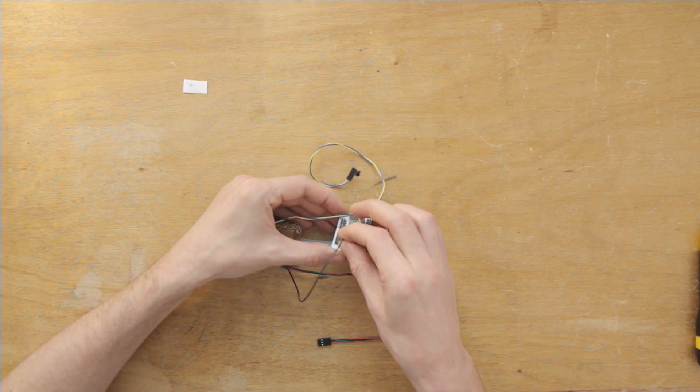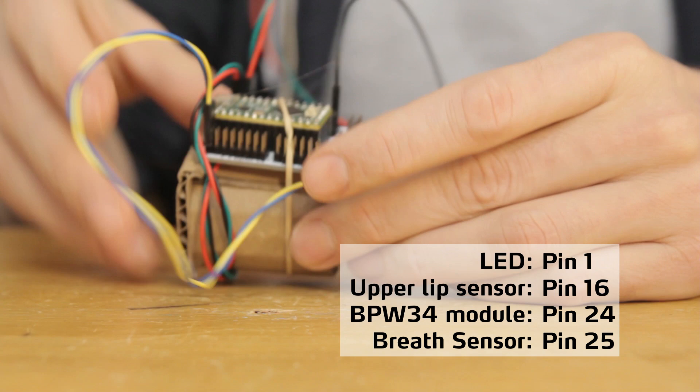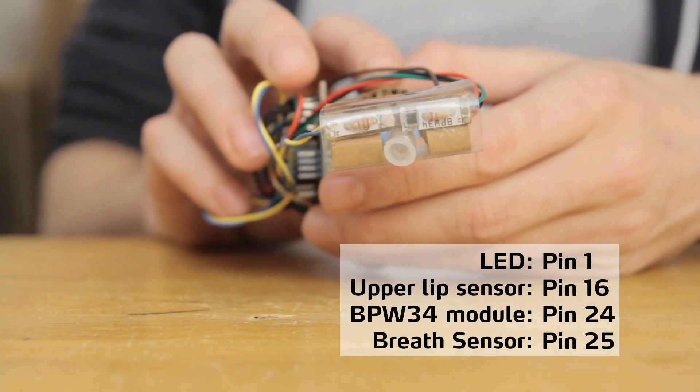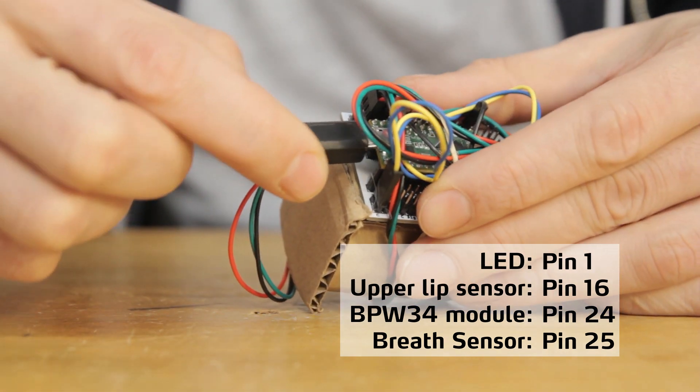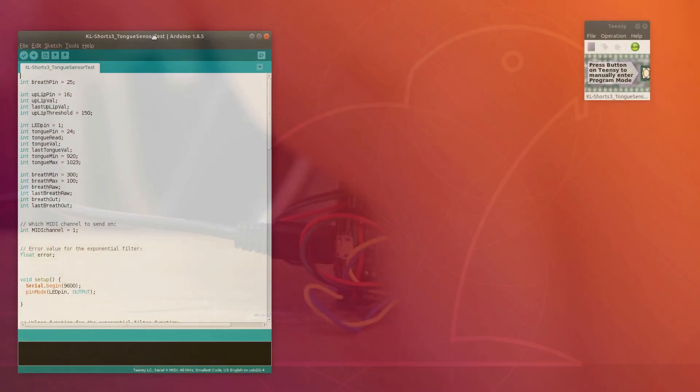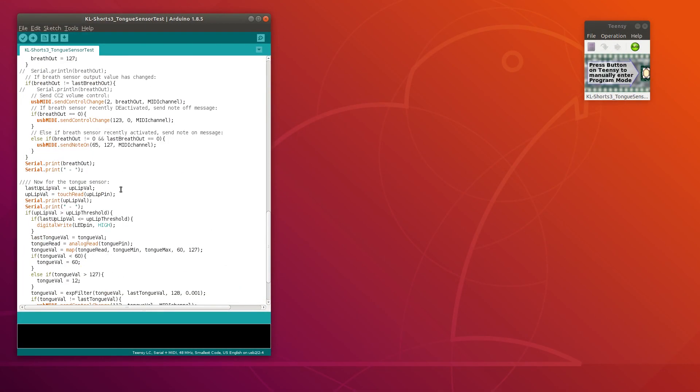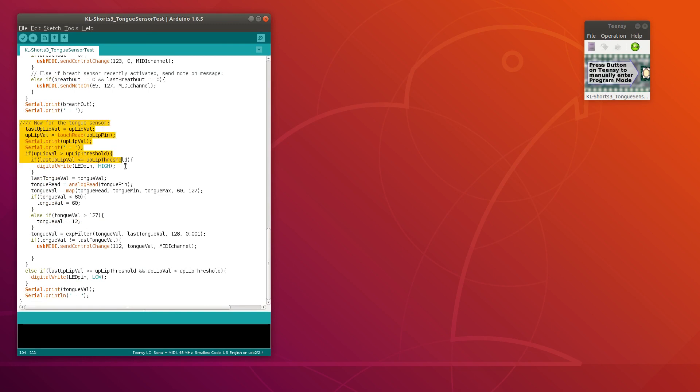And then I'll plug the sensors and LED into the breakout board. And now I'm ready to connect to the computer via USB and upload a bit of code. This sketch includes the original breath sensor code, as well as the code for the new sensors.